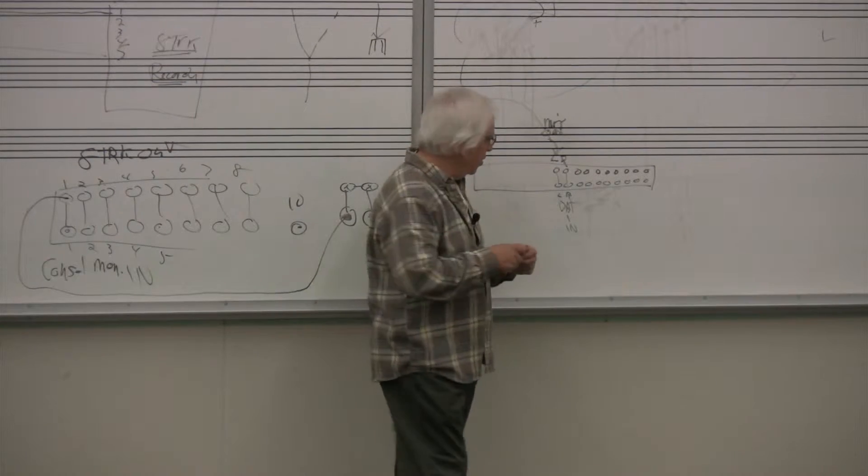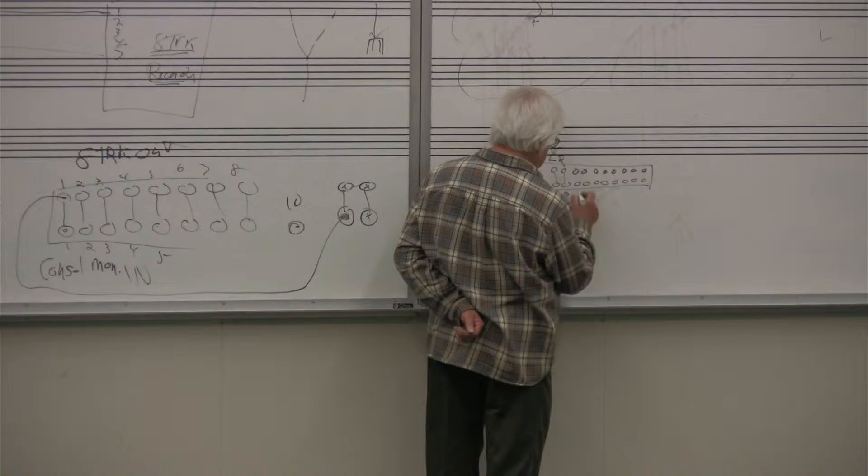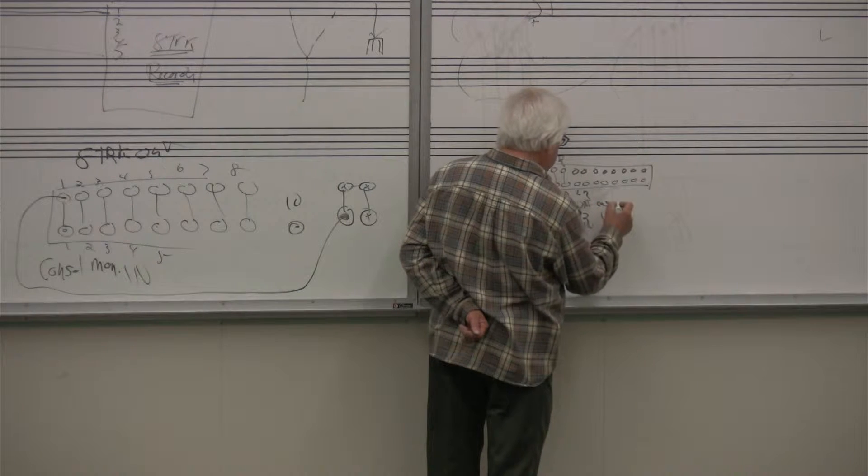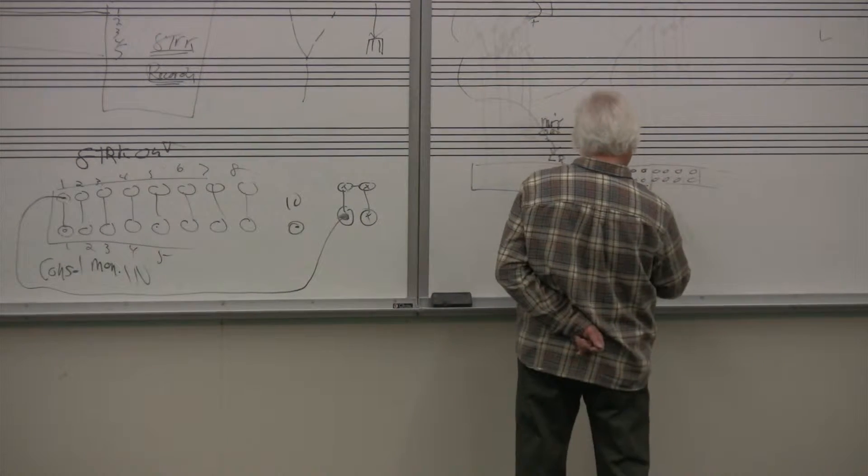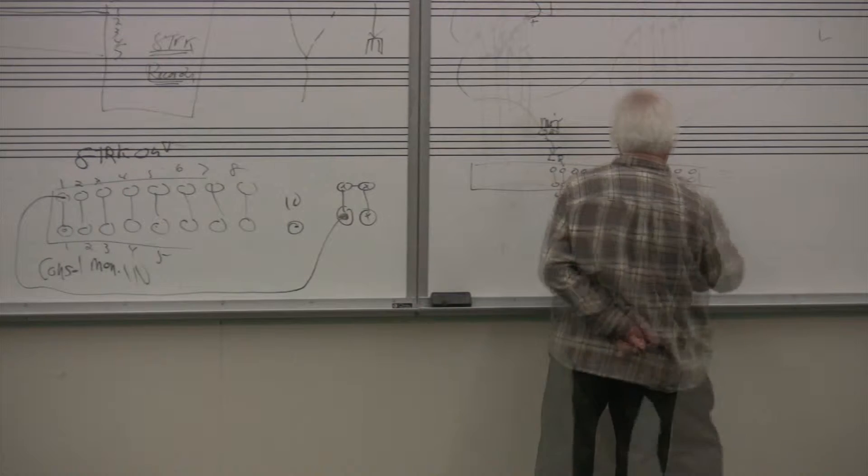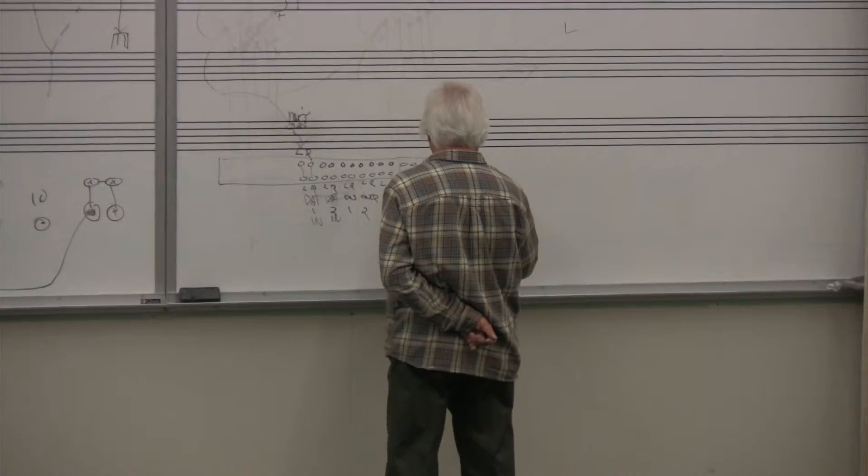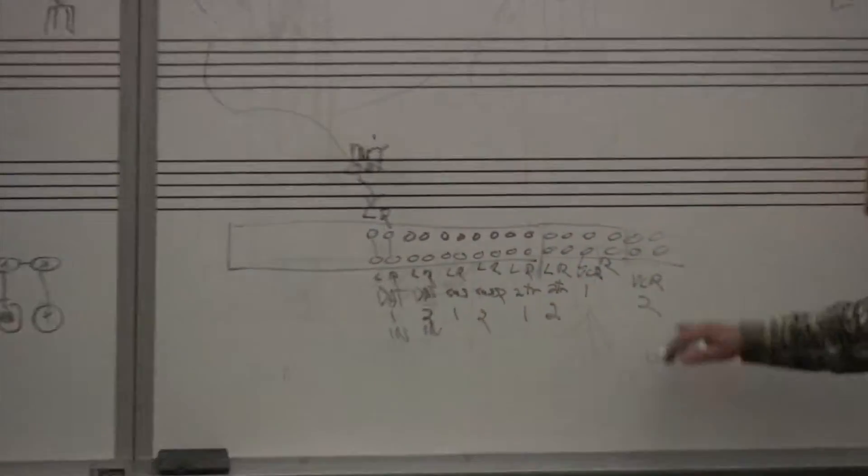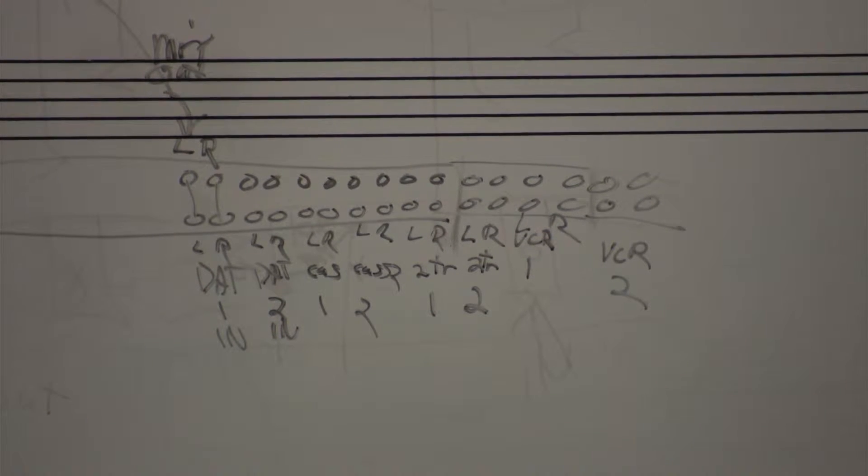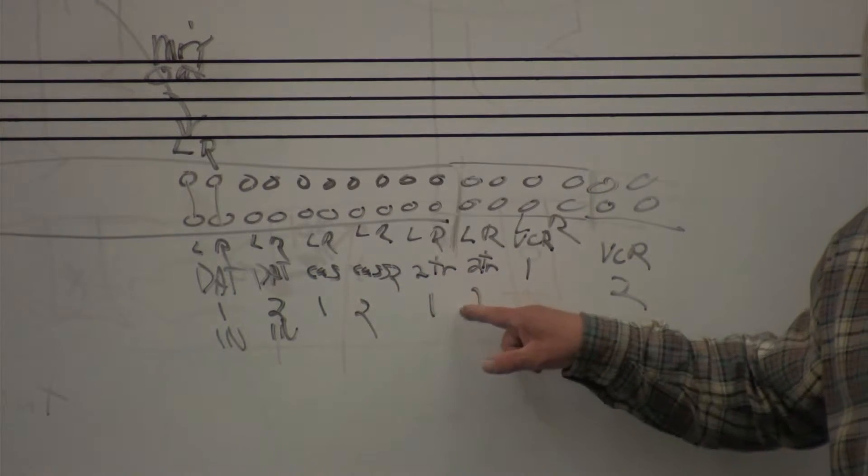In that room right there, I have a DAT number 2 in left, right, cassette 1 and cassette 2, 2-track 1 and 2-track 2, and VCR 1 and VCR 2. I have all these 2-tracks. First of all, I have 2 VCRs, but I don't have 2 cassettes and I don't have 2 2-tracks, but I may.